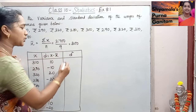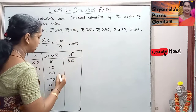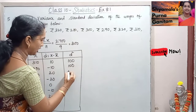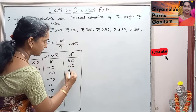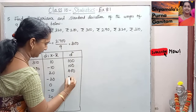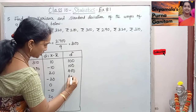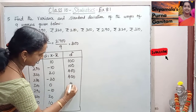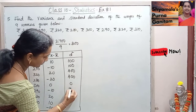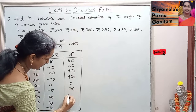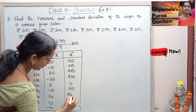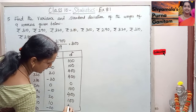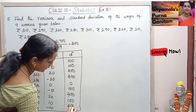Now d squared — squaring each d value: 10² = 100, (−10)² = 100, 20² = 400, (−20)² = 400. Then for the remaining values: 0, 100, 400, 100, and 400.